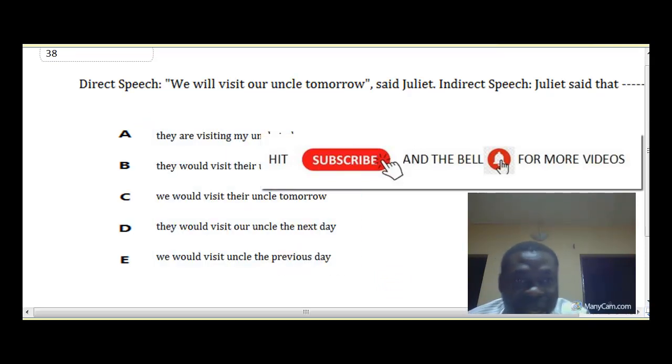Question 38. Now the question is on direct speech. We will visit our uncle tomorrow, said Juliet. Now you are reporting the speech indirectly, what do you say? Look at it: we will visit our uncle tomorrow. Okay, so if you are reporting it indirectly, you start from Juliet. Juliet said that.